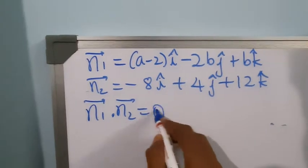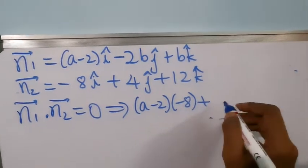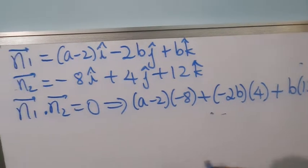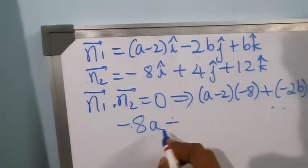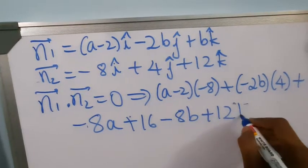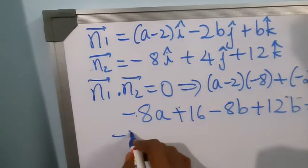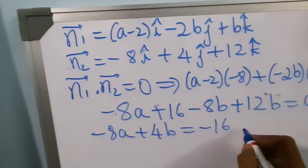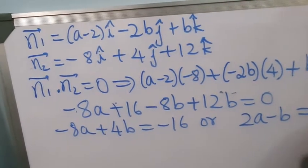Since the surfaces are orthogonal, n1 · n2 = 0. This gives (a−2)(−8) + (−2b)(4) + (b)(12) = 0, which simplifies to −8a + 16 − 8b + 12b = 0, giving −8a + 4b = −16, or 2a − b = 4. We call this equation (1).